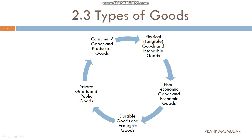Durable goods means goods which are used for multiple times — that will be known as durable goods. Perishable goods are those which are used for a single time; you use that product one time and then you have to change it.